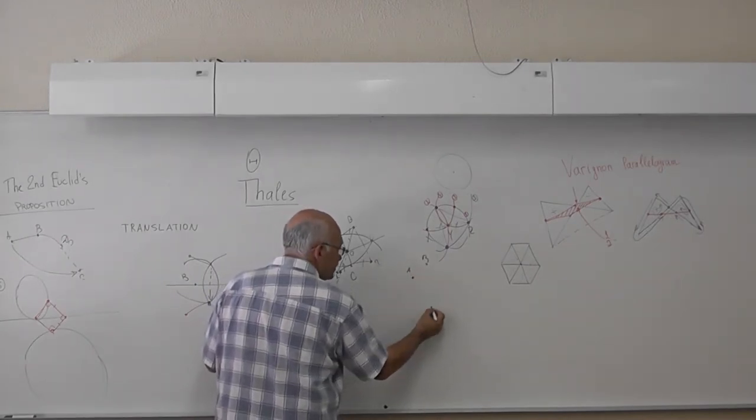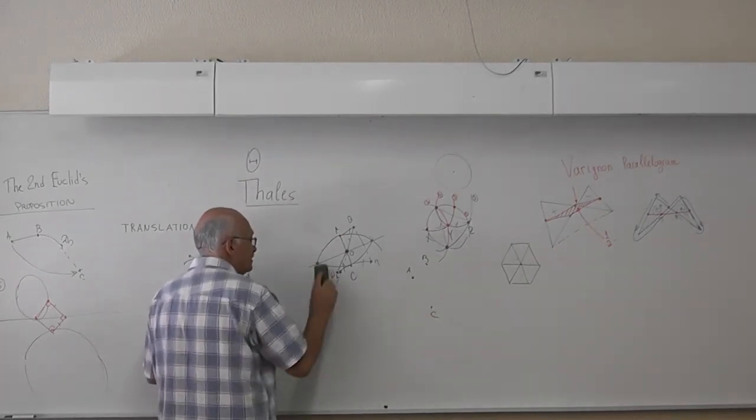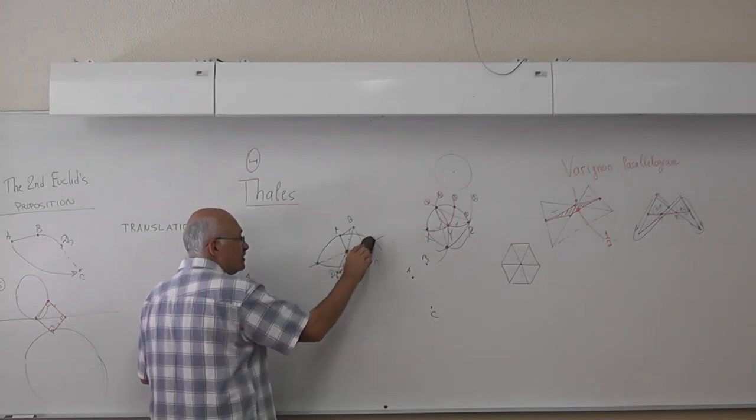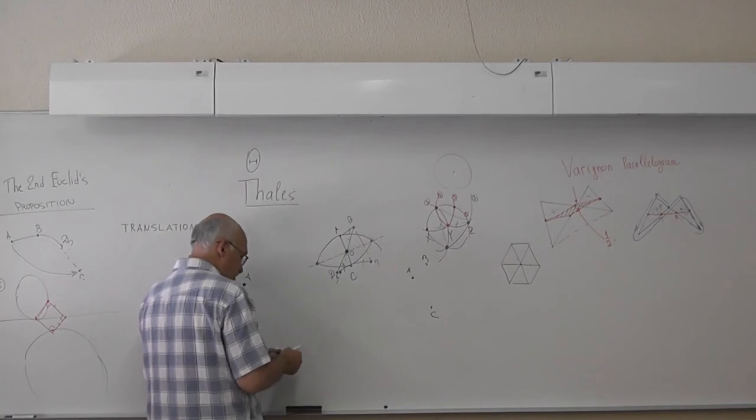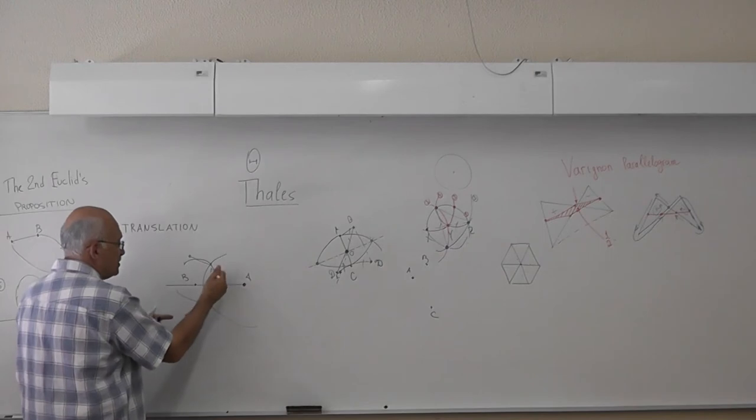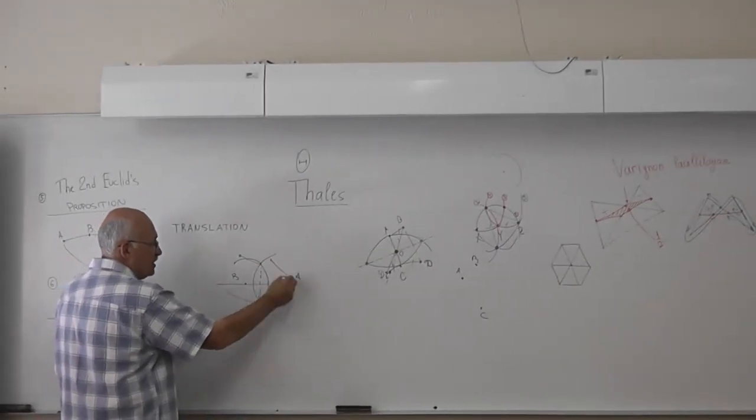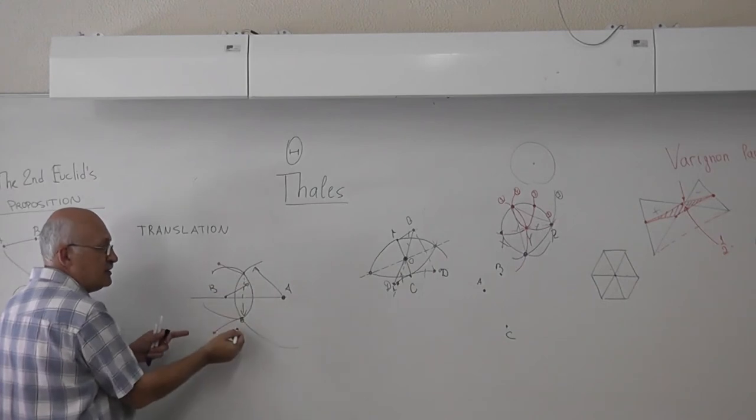Simply we notice that we don't need all this line to construct reflections. We need only two points of this line. Here, we need only two points, one point A at the center and point B at the center.